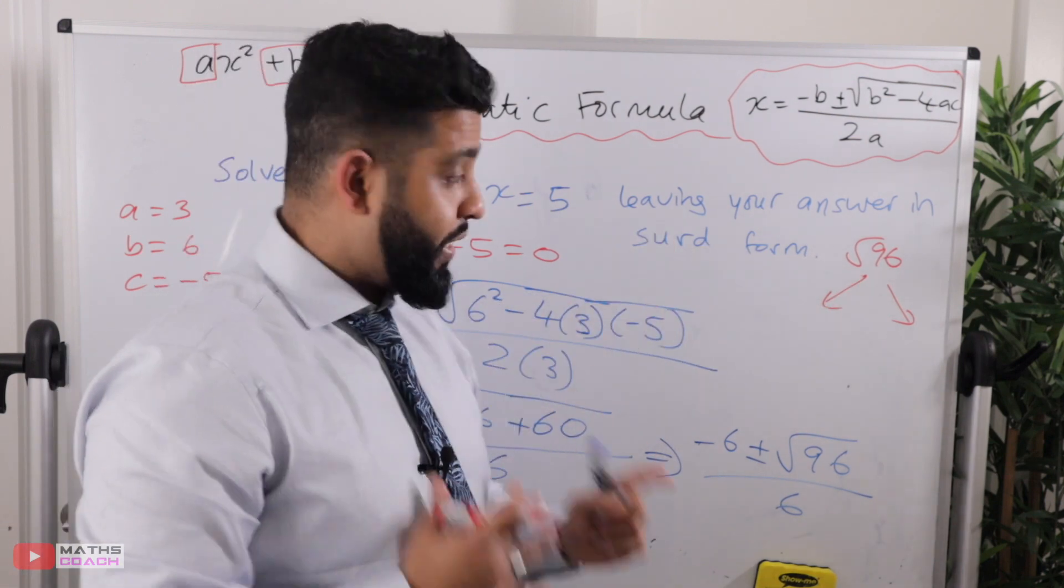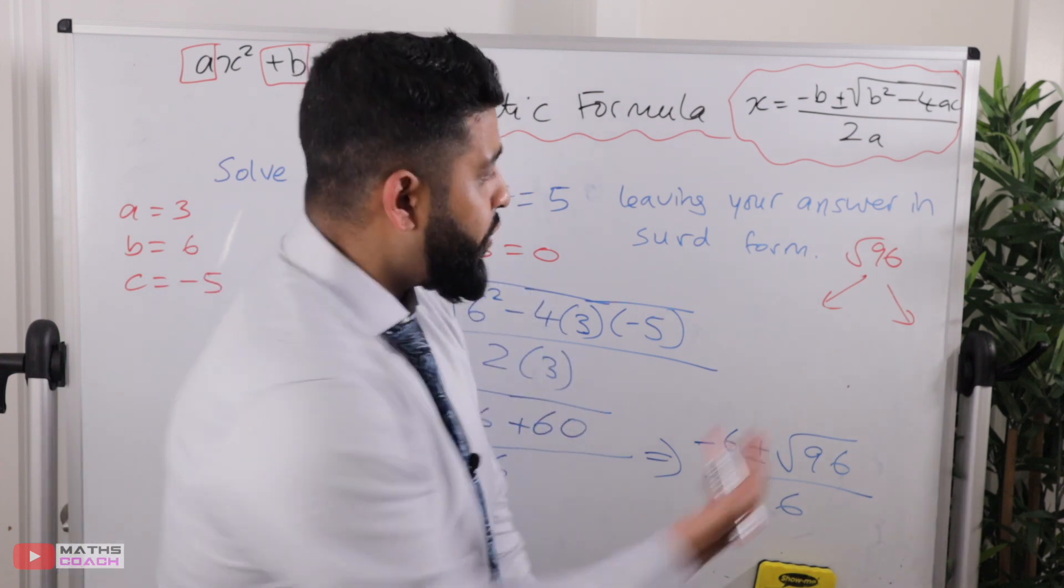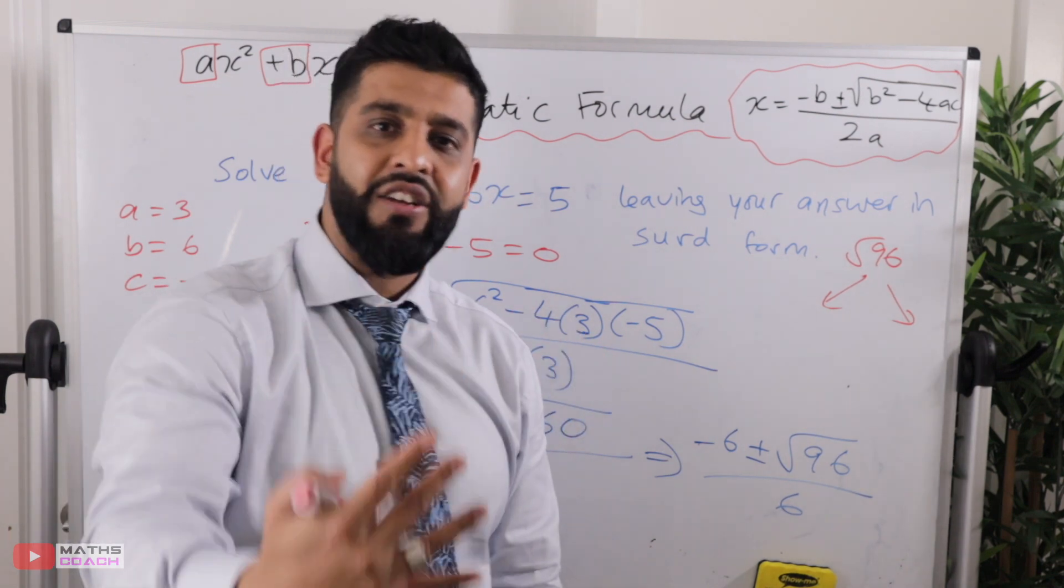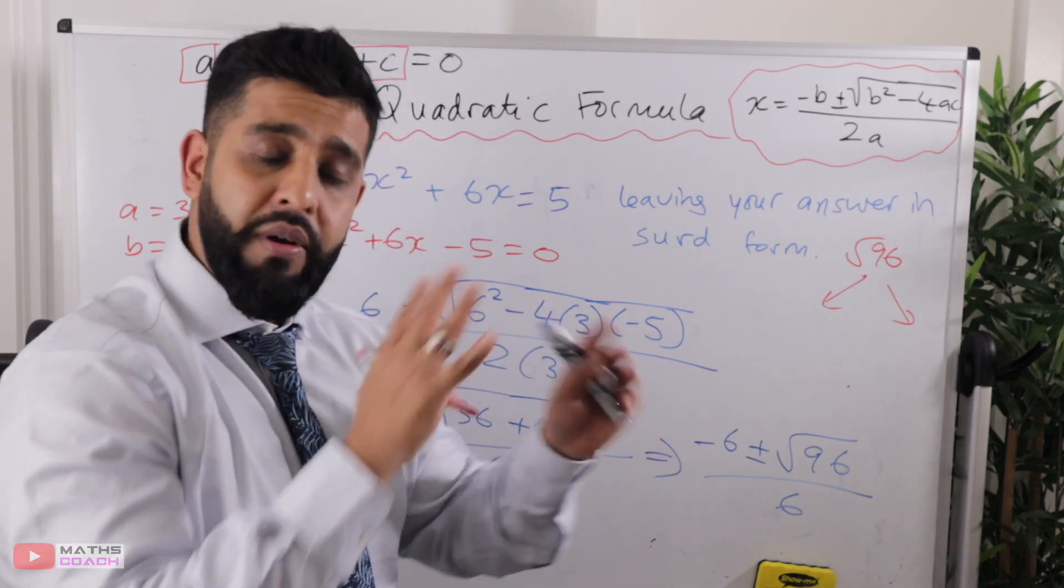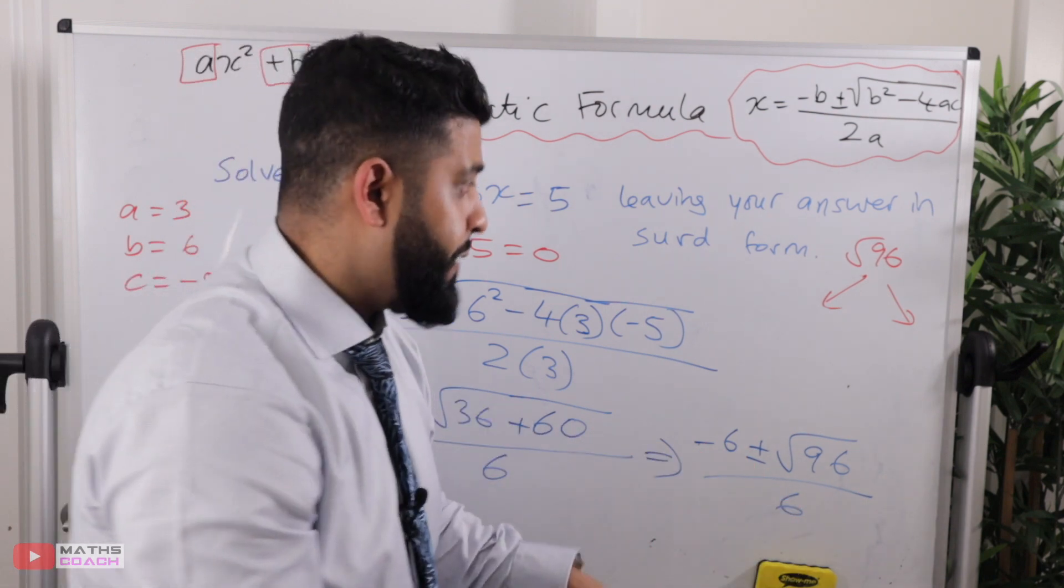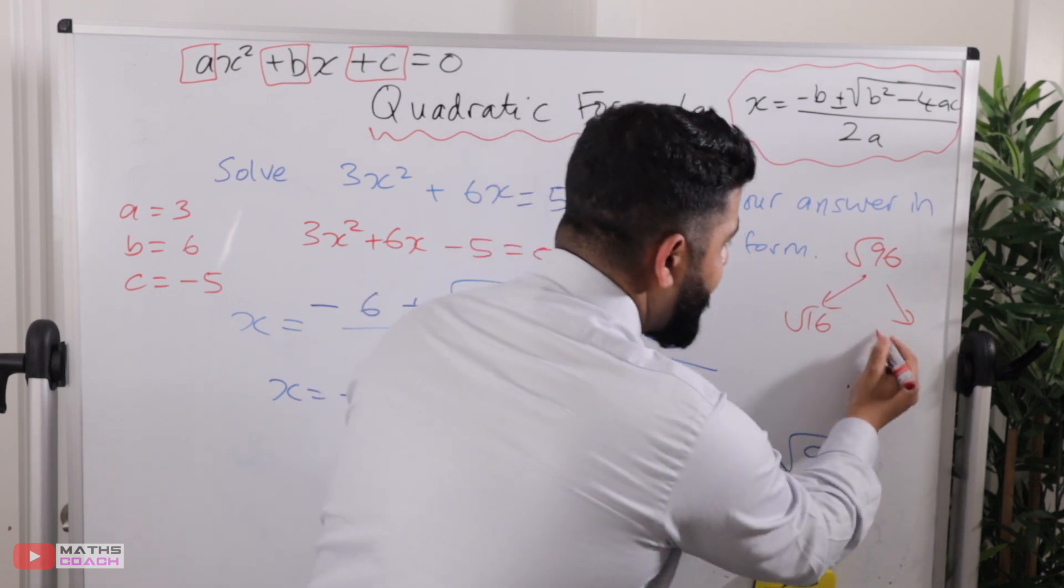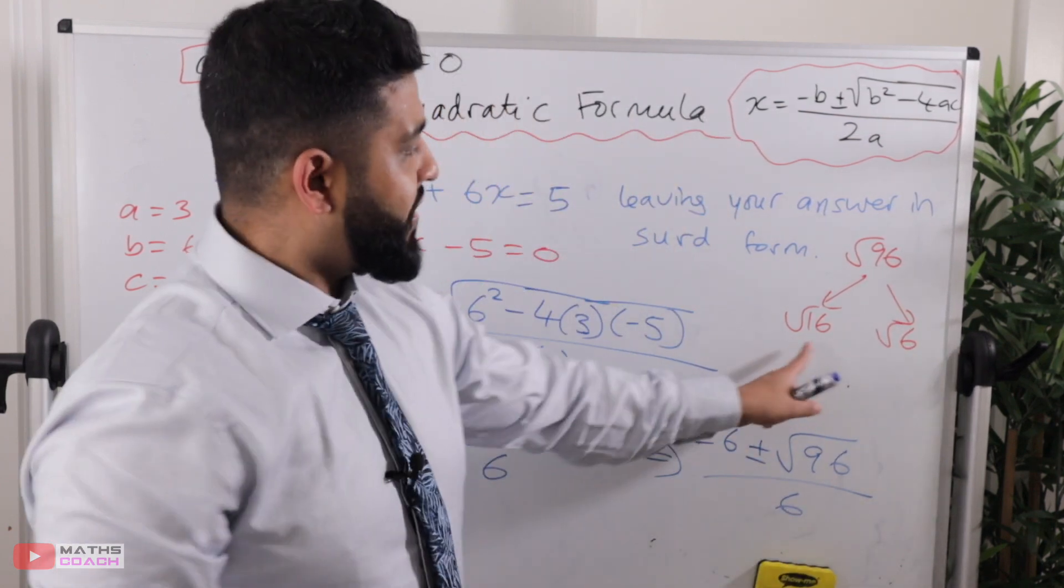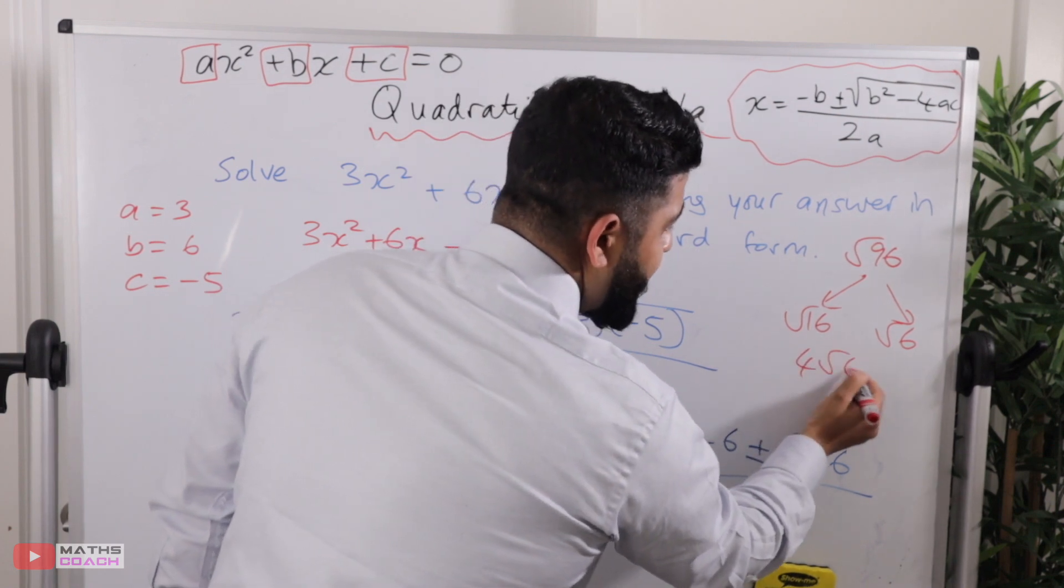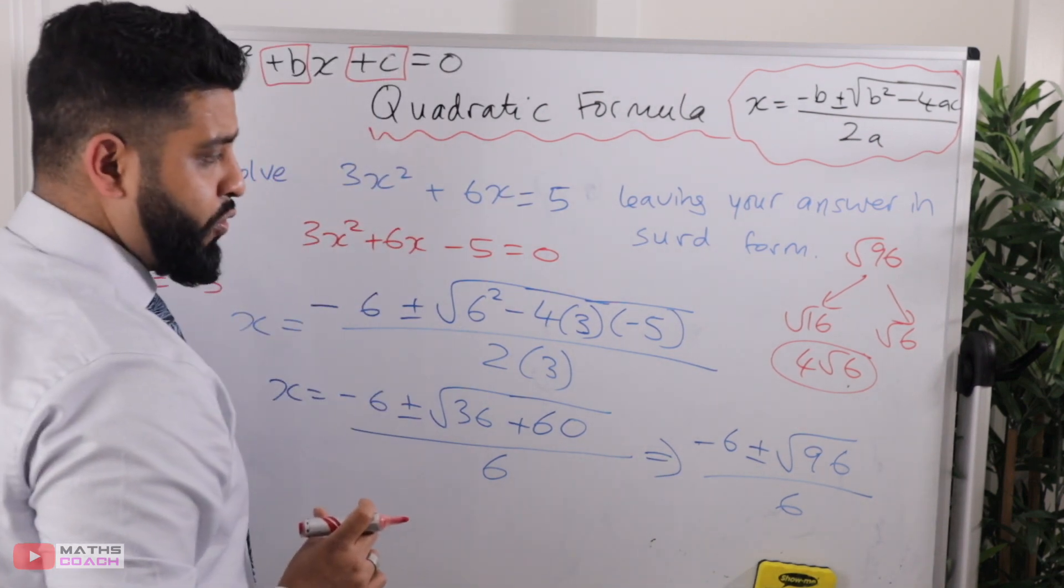We're looking for the largest square number that goes in there. If you can't get to that largest square number straight away, it's not a problem. For example, 4 and 24 can give you that. But 4 isn't the largest square number that goes into 96. But if you've done that, no problem. You're just going to have to break up that square root of 24 again. We know that 16, root 16, times by root 6. 16 times 6 is 96. And root 16 gives us 4 and root 6. So root 96 can be rewritten as 4 root 6.